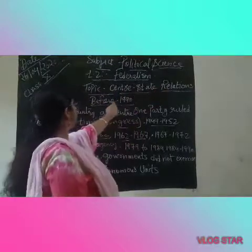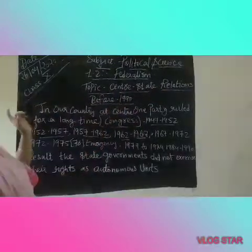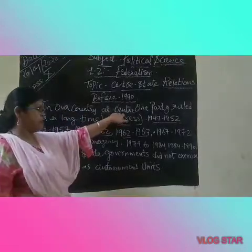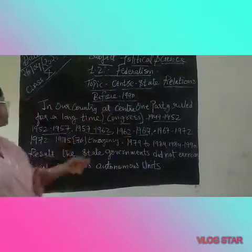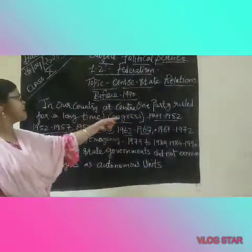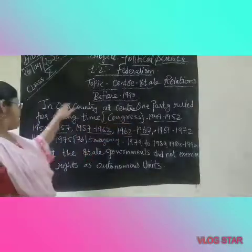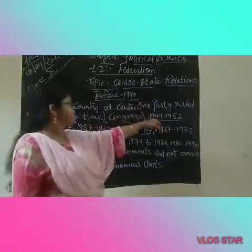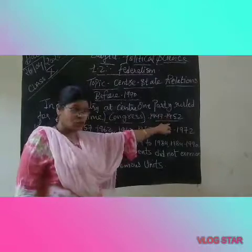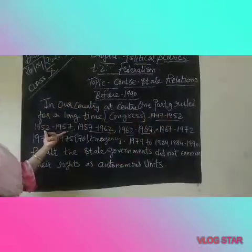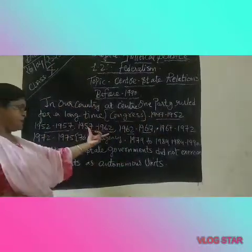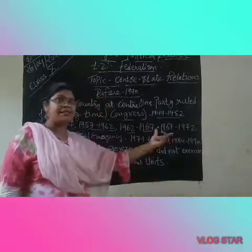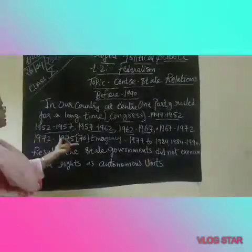Center-State relations before 1919. In our country, at the center, one party ruled for a long time — that was Congress. From 1947 to 1952, 1952 to 1957, 1957 to 1962, 1962 to 1967.